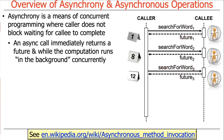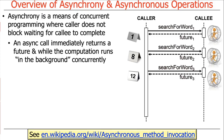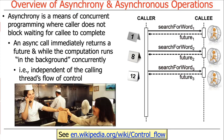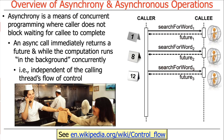You can see how it goes ahead and makes all these calls — the callee is off doing something in the background. The caller gets back something called a future, which you can then redeem at some later point to get the results. This means the callee is now independent of the calling thread's flow of control.